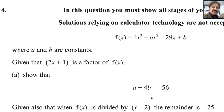f of x equals 4x cubed plus ax squared minus 29x plus b, where a and b are constants. Given that 2x plus 1 is a factor of f of x, show that a plus 4b equals negative 56.